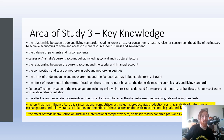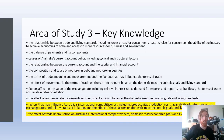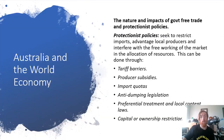Let's start off with what we're looking at in the key knowledge. Factors that may influence Australia's international competitiveness including productivity, production costs, availability of natural resources, exchange rates, relative rates of inflation, and the effect of these factors on domestic macroeconomic goals and living standards. Essentially, this is about how various things within Australia affect how well we're able to compete with overseas competitors. We'll mainly look at the effect of trade liberalisation on Australia's international competitiveness, domestic macroeconomic goals and living standards.